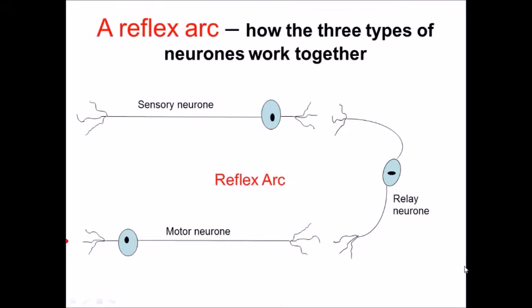So a reflex arc—essentially we're going to discuss this and show how the three types of neurons can all work together. If we use a situation of you putting your hand on something hot and that causing a reflex where you basically whip your hand away from the hot object very quickly, we can see how these three types of neurons interact with one another.